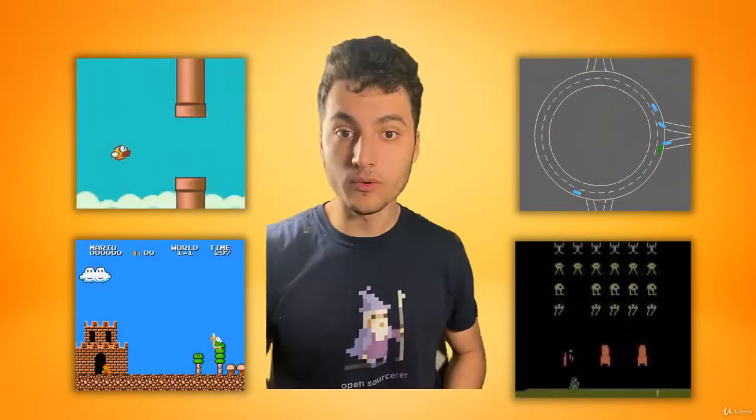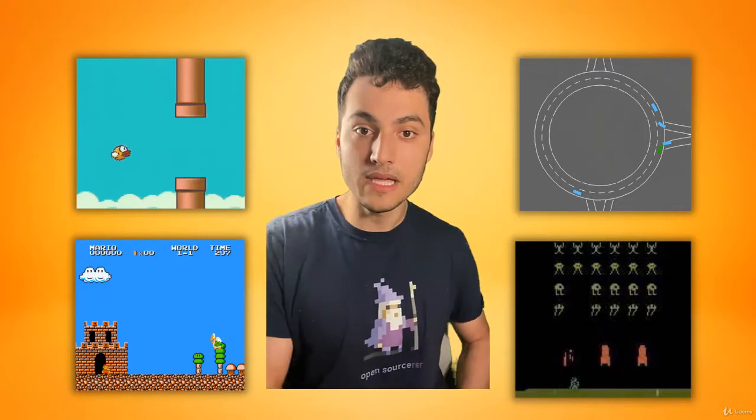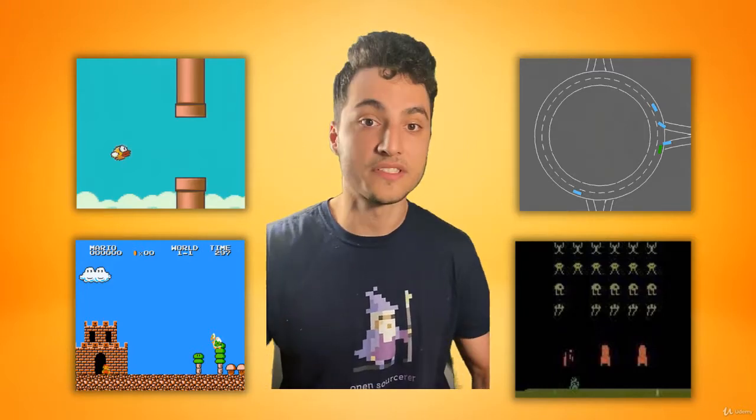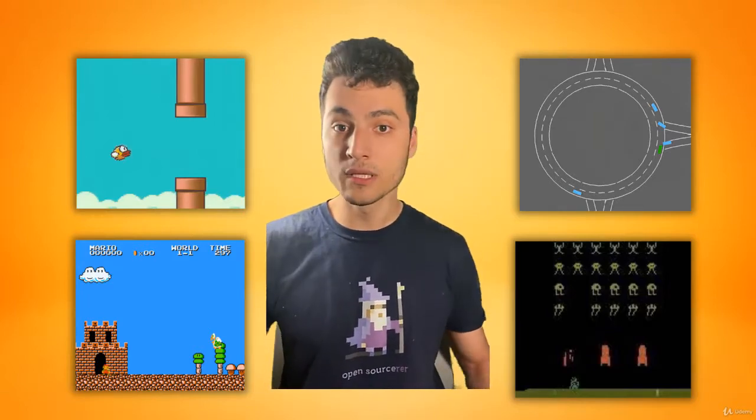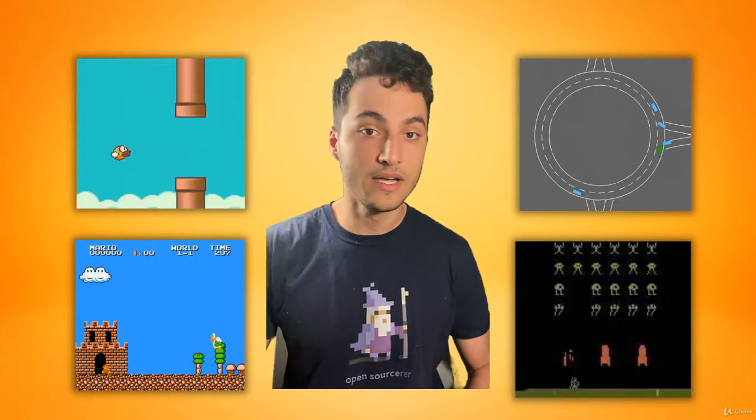Next we're going to use a very simple environment where we have an autonomous taxi agent, and the entire goal of this agent is to pick up people and drop them off at their desired location. We're going to be building a Q-learning algorithm from scratch — and if you're unfamiliar with Q-learning, it's considered the hello world of reinforcement learning, and I will explain it in the course.